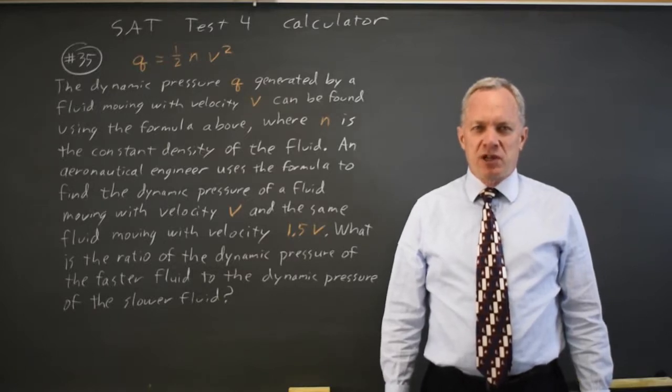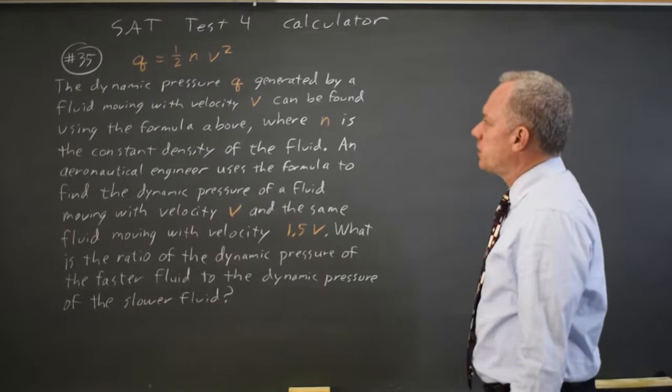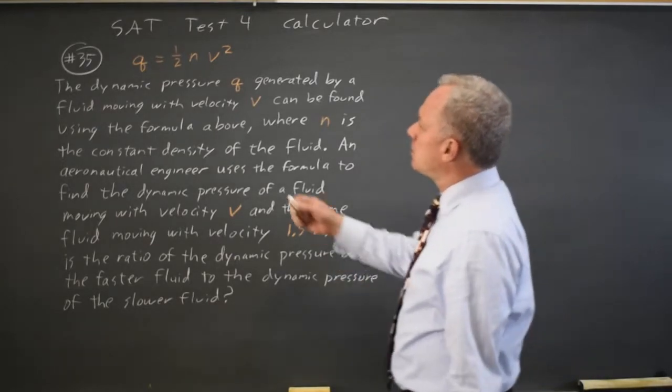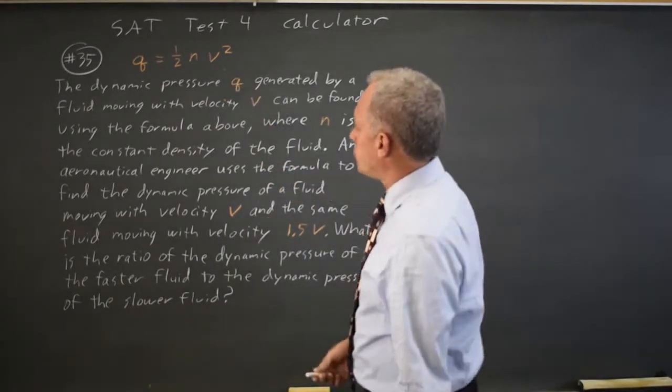This is calculator question number 35. The College Board is asking us to find the ratio of dynamic pressures using this equation for two velocities.